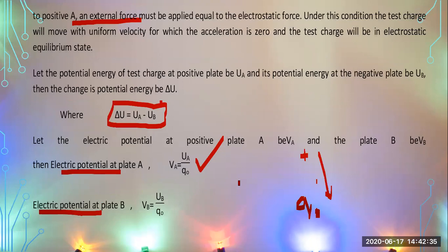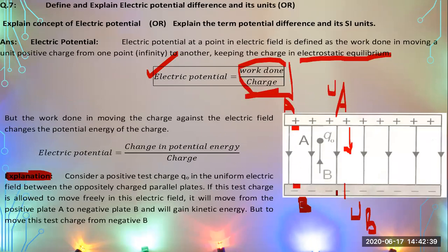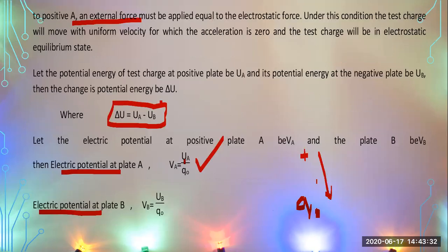To summarize: we have two plates, one positive and one negative. If a positive charge particle is free, it moves from the positive plate toward the negative plate and gains kinetic energy. But if you try to move this charge particle from the negative to the positive plate, since the charge is itself positive, you have to do work to overcome the repulsive force and move it against the electric field intensity. The work done equals the change in potential energy from B to A.